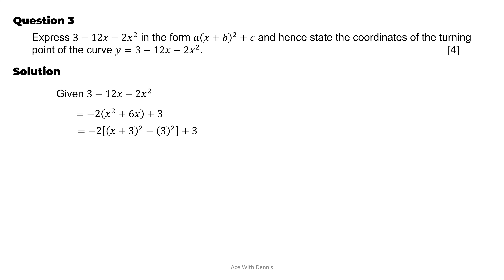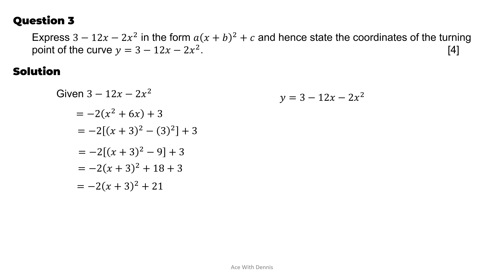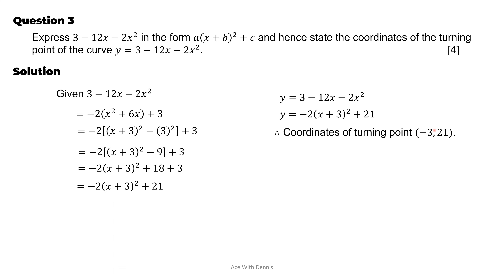Expanding gives negative 2(x plus 3) squared plus 18 plus 3, which simplifies to negative 2(x plus 3) squared plus 21. This is the completing-the-square form. The turning point of the curve is at (negative 3, 21). Note: when the bracket reads (x plus 3), switch the sign to get x equals negative 3, and the y-coordinate is simply 21.